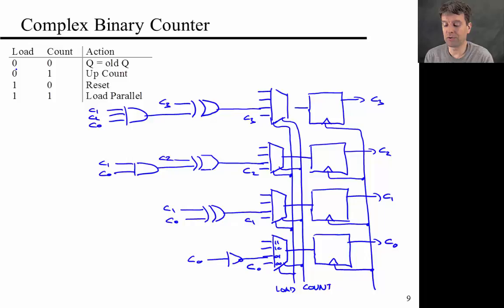Now, if I set my controls, load to 1, count to 0, then I'm resetting. So I'm going to put zeros here. Finally, if I'm setting load and count to 1, I'm loading in a new number in parallel. So this number is P3, P2, P1, P0.